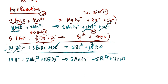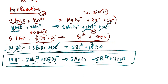Checking the balanced equation: 14 hydrogens each side; 2 manganese each side; 5 bismuth each side. Oxygens: left side 5 × 3 = 15; right side 2 × 4 = 8 plus 7 = 15. Balanced by mass. For charge: left side 14 + 4 − 5 = 13; right side 5 × 3 = 15 − 2 = 13. Balanced by charge as well. This is the final balanced oxidation-reduction equation for this reaction in acid solution.